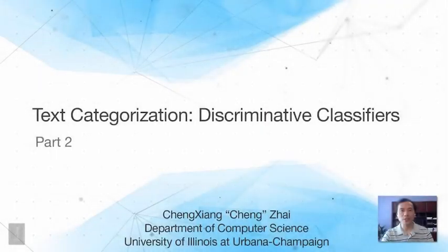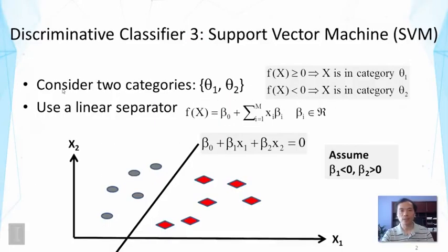This lecture is a continued discussion of discriminative classifiers for text categorization. We are going to introduce yet another discriminative classifier called support vector machine, or SVM, which is a very popular classification method that has also been shown to be effective for text categorization.